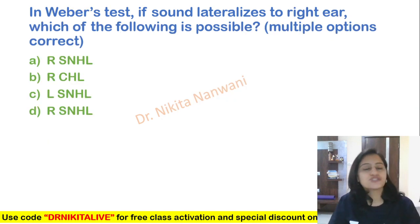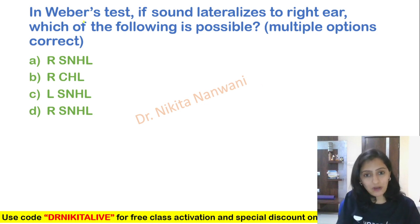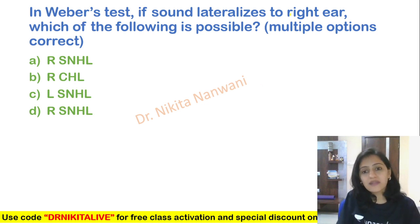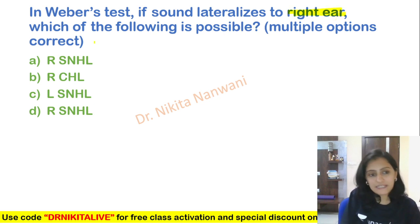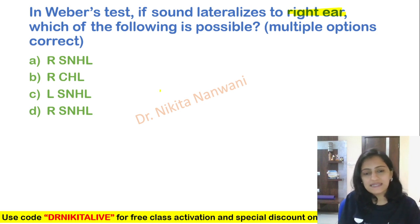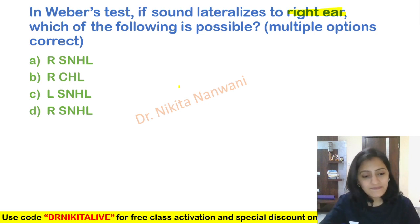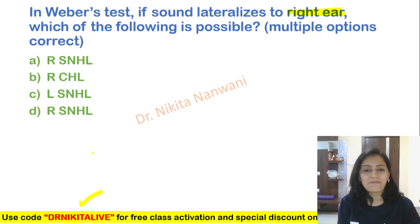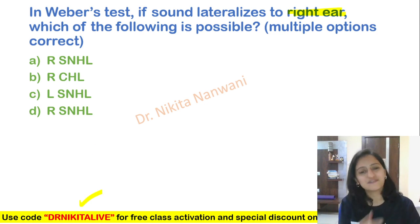Here's an assessment question for you — do let me know the answer in the comments below. In Weber's test, if sound lateralizes to the right ear, which of the following is possible? Multiple options correct. Do you think it is A, B, C, or D? Do let me know in the comments. I'm hoping to see you all in the free live class on the NACademy app at 5pm for ENT Rapid Revision with more such mnemonics, tricks and concepts.